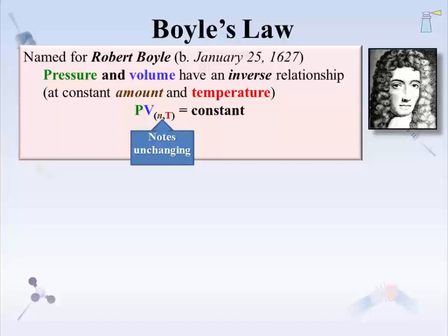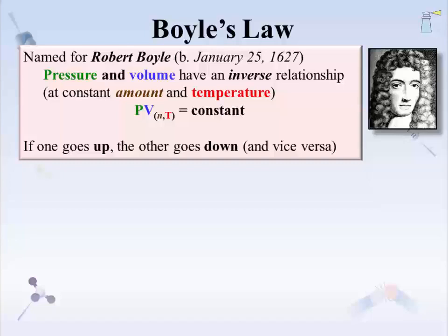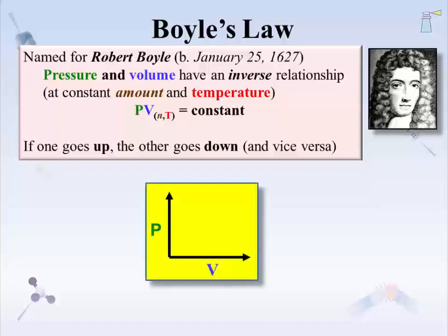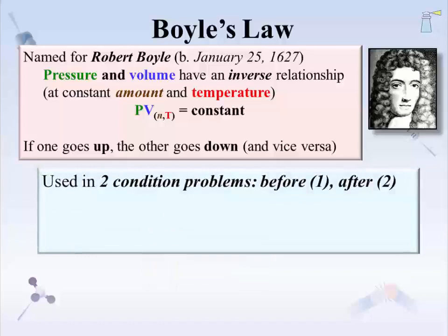Pressure and volume will change, but not amount and temperature. What that equation is really saying is that if one of these two properties goes up, the other one goes down, and vice versa — raise the pressure and the volume goes down; increase the volume and the pressure goes down. This law can be shown graphically by plotting volume on the x-axis and pressure on the y-axis. As the volume is increased, the pressure is decreased. This is what inversely proportional looks like.